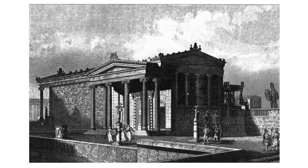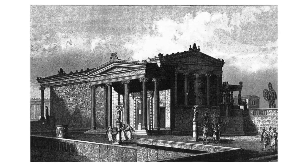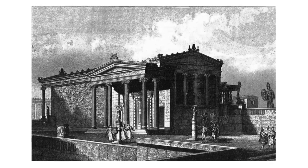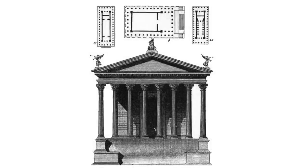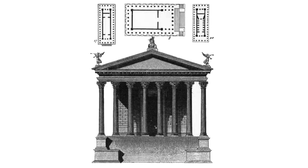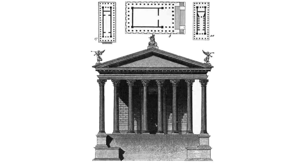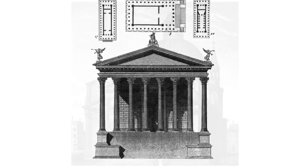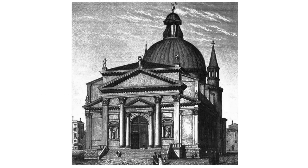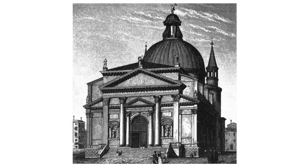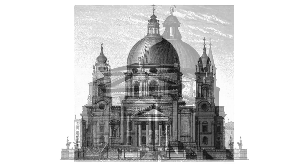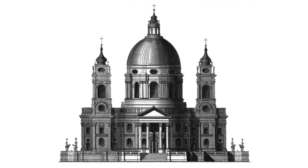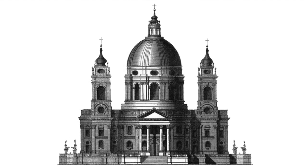In architecture, the term classical is used to refer to design that borrows from the Greek and Roman styles of antiquity, about 600 BC to 600 AD. Architecture of the Renaissance and beyond commonly features stylistic elements of classicism.